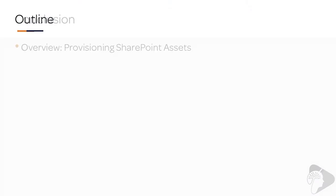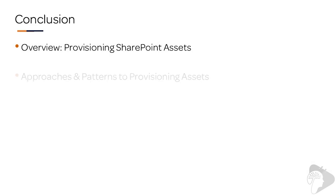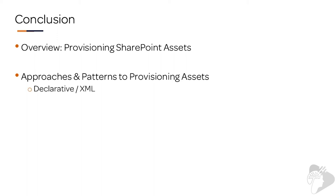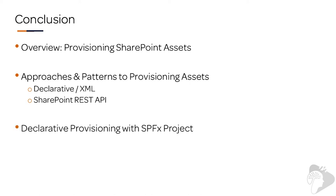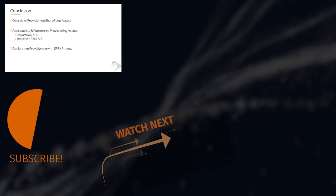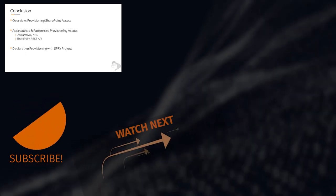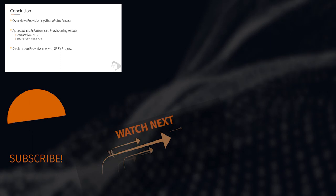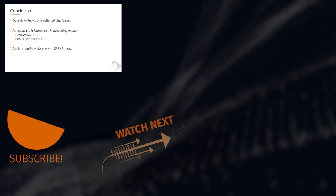In this chapter, we'll start out by looking at an overview of provisioning SharePoint assets, and then look at the different approaches and patterns we have, including the declarative or XML-based approach and also using the SharePoint REST API. While we have a couple of different options available to us, we're going to focus primarily on the SharePoint Framework, so I'll look at the declarative approach in the demo for how to create and provision assets using a SharePoint Framework-based solution. I'll provide links and references on where you can learn more about provisioning with the SharePoint REST API that are not specific to the SharePoint Framework.